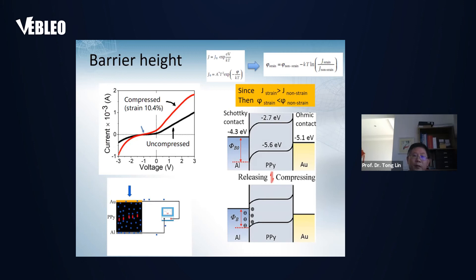Using the classical equation, we can calculate the barrier height of this Schottky junction and found that the barrier height reduces under compression. Also the PPY under compression improves in conductivity.